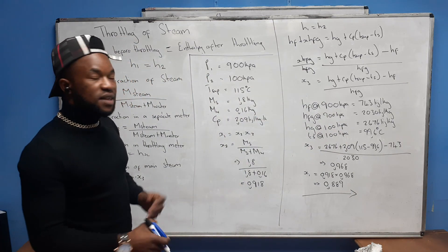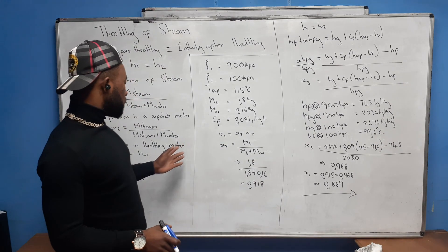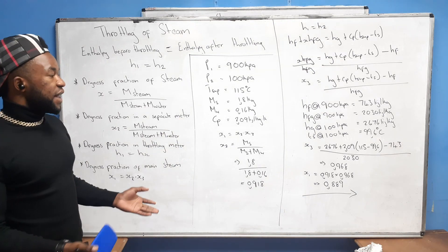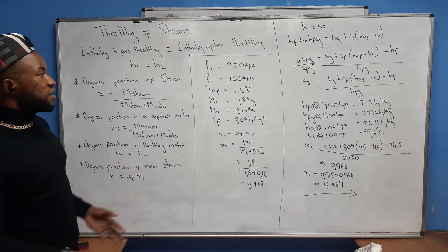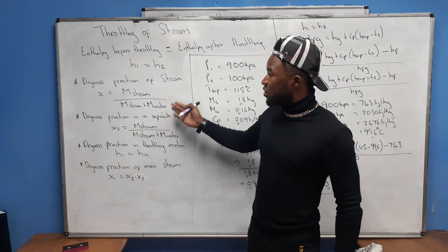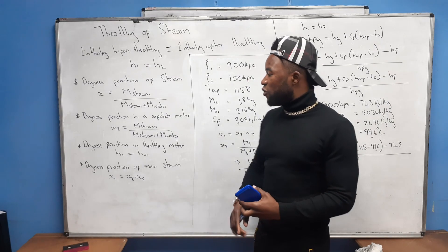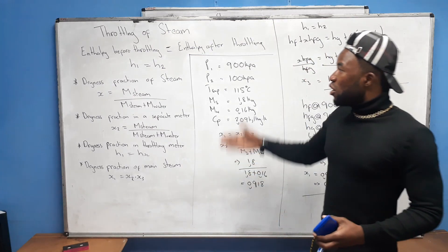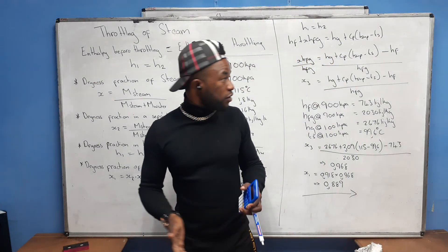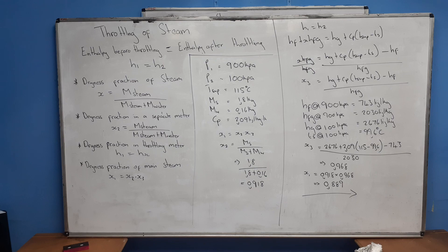So basically that's it. Some questions will ask you to calculate x2 and x3 separately and then get x1, but here we just needed the dryness fraction of the main steam. You just have to know the formulas: the dryness fraction for the separating meter, the throttling meter, and the main steam. Practice more of these questions for a better understanding. Thank you for watching — I'll see you next time.